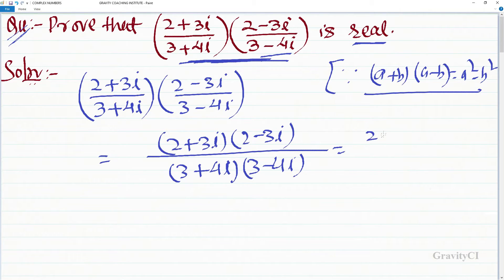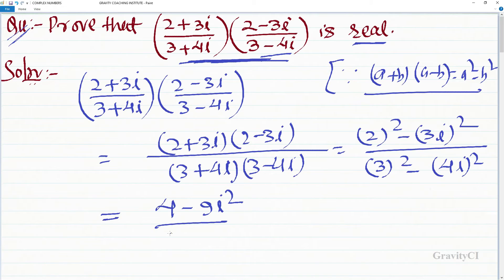2 whole square minus 3 iota whole square upon 3 whole square minus 4 iota whole square. This equals 4 minus 9 iota square upon 9 minus 16 iota square.